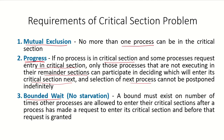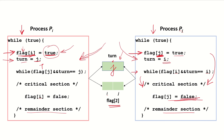The third requirement is bounded wait: a bound must exist on the number of times other processes are allowed to enter the critical section after a process has made a request and before that request is granted. In Peterson's solution, once process PI exits the critical section it sets its flag to false, meaning it will not re-enter the critical section, and it allows PJ to proceed. So there is a bound on the number of times a process enters the critical section.